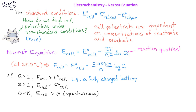However, once the system reaches equilibrium, the reaction quotient will equal the equilibrium constant, and at equilibrium the cell potential will equal 0. This is what happens when we say a battery is dead.